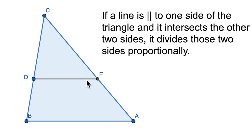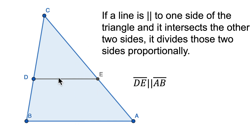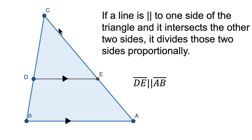The line we're talking about is DE, and it's parallel to one of the sides down here, BA. So DE is parallel to AB. If a line is parallel to one side of the triangle, and it does intersect the other two sides — intersecting at D and at E — we're told that this line will divide side CB in a proportional way to how it divides CA.